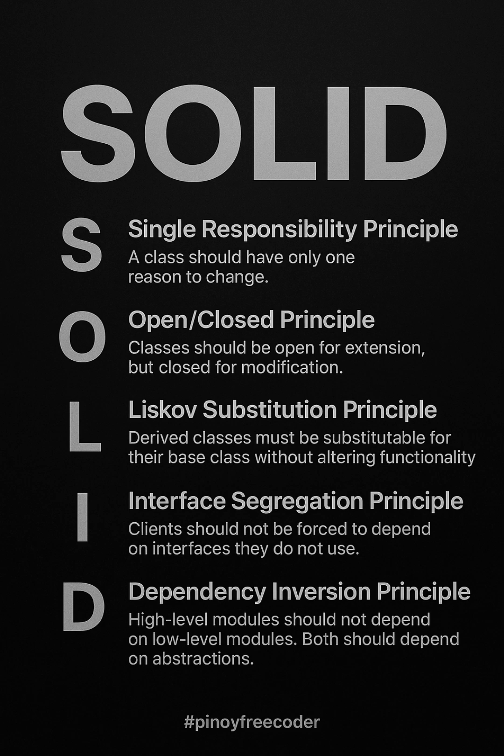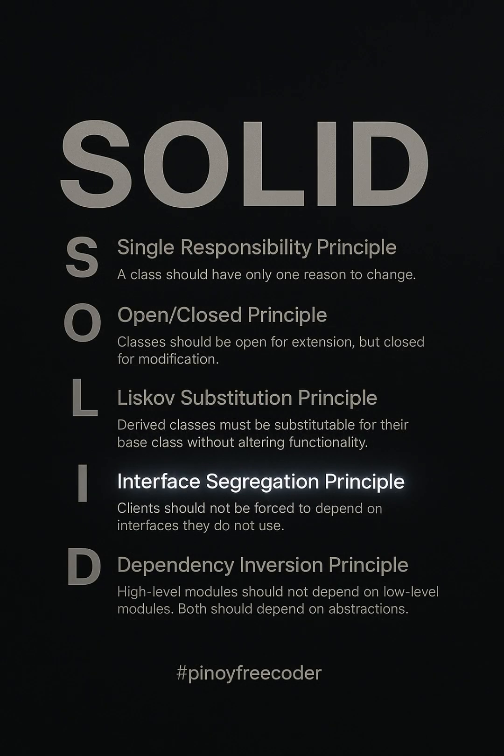In object-oriented programming, writing clean and maintainable code is essential for building robust software. One of the most effective ways to ensure this is by following the SOLID principles. Today, we're going to dive into one of these principles: the Interface Segregation Principle, or ISP. ISP emphasizes the importance of keeping interfaces focused and specific. Rather than forcing a class to implement methods it doesn't need, we break down large interfaces into smaller, more meaningful ones, resulting in cleaner, more maintainable code.